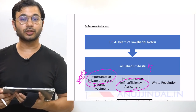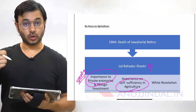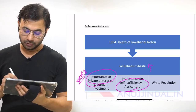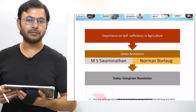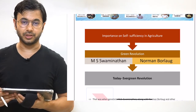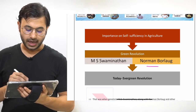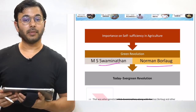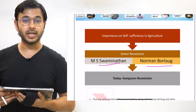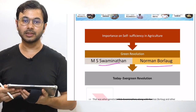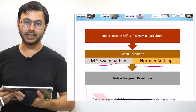Lal Bahadur Shastri's third major contribution was the White Revolution. He understood the importance of the dairy industry for India's growth and nutritional needs, and embarked on the White Revolution started by Varghese Kurian. The Green Revolution was led by Mexican scientist Norman Borlaug and Indian scientist MS Swaminathan. The focus of agriculture then was self-sufficiency, but today the focus is on sustainability — Swaminathan advocates moving from Green Revolution towards Evergreen Revolution, meaning sustainable agriculture.